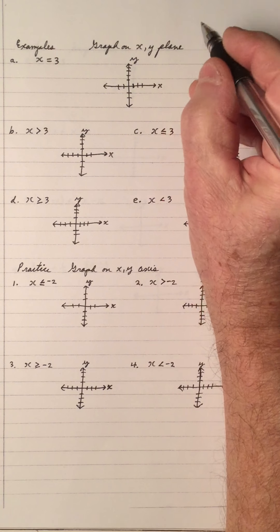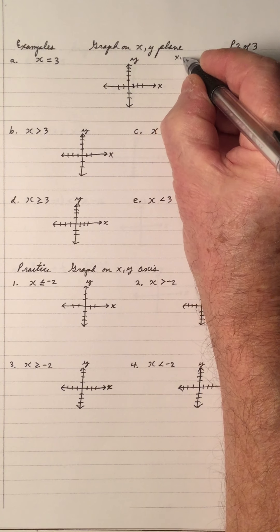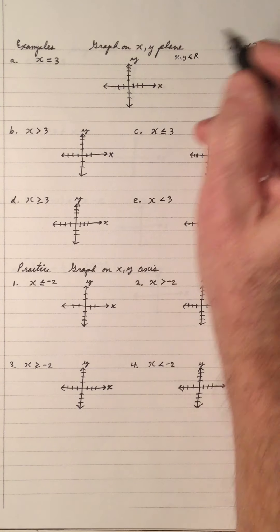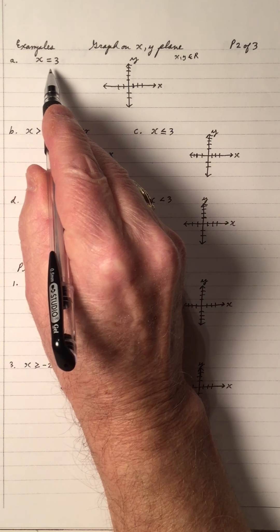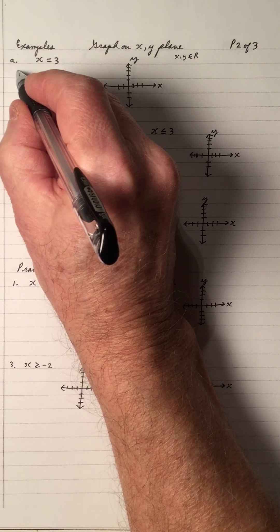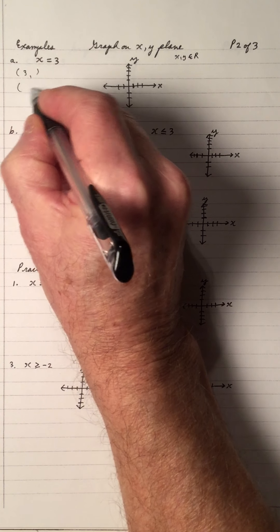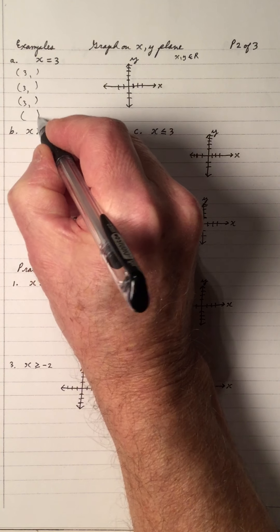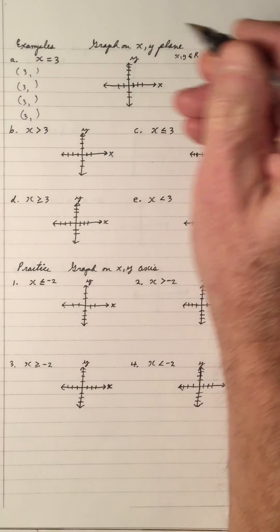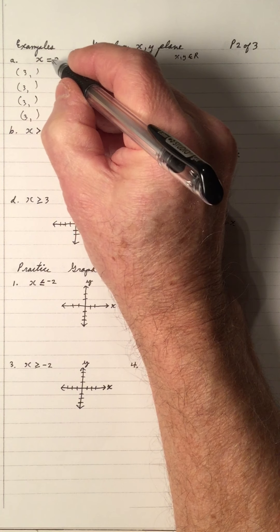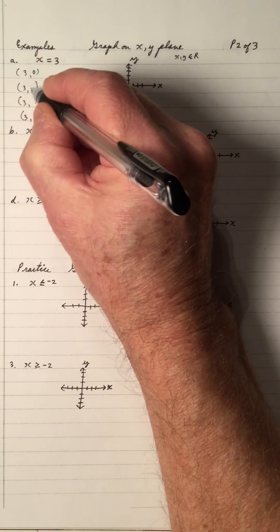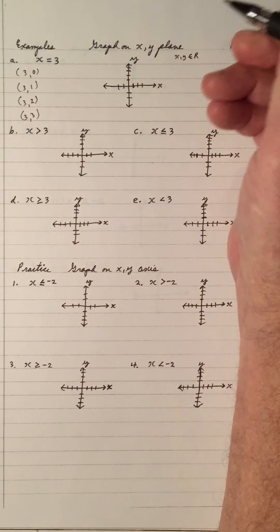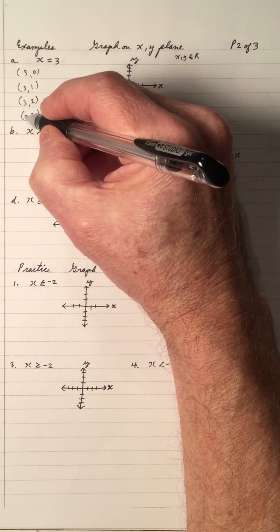Graph each on the xy plane. xy belongs to the real numbers, which means shading. This time we have x equals 3. x equals 3 means every ordered pair has a 3 for x. As long as x is 3, y can be anything — y could be 0, 1, 2, 3, 2 and a half — y could be anything, as long as the x coordinate is 3.